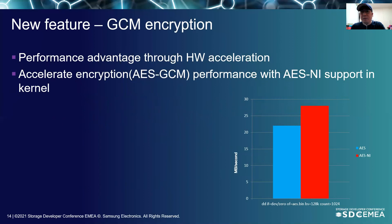KSMD encryption performance can be improved with hardware acceleration in the kernel. If your CPU supports AES-NI, it will be enabled and automatically use the installed module in your Linux distribution. If you manually build the kernel, just enable the AES-NI module in the kernel config. CCM seems to be faster than GCM, but GCM performance with AES-NI is better than CCM. So Windows prefers GCM over CCM. GCM encryption in KSMD is supported with AES-NI, and users can enjoy better performance with KSMD on encrypted data connections.